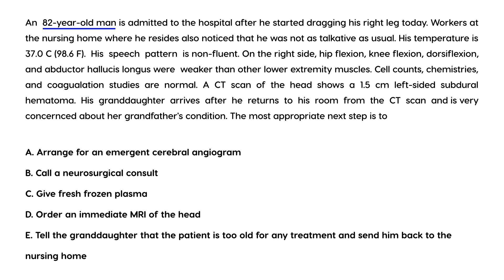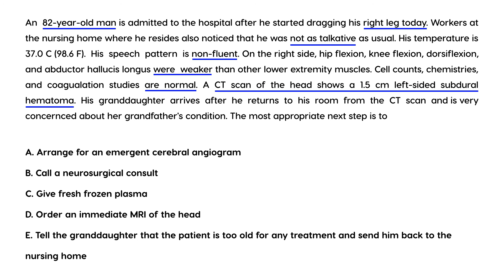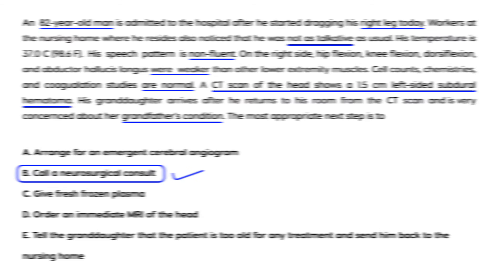Third vignette: an 82-year-old man is admitted after he started dragging his right leg. Nursing home workers noticed he was less talkative. His speech is non-fluent, and right-side hip flexion, knee flexion, dorsiflexion, and abductor hallucis longus are weaker. Cell counts, chemistries, and coagulations are normal. CT scan shows a 1.5-centimeter left-sided subdural hematoma. The most appropriate next step is a neurosurgical emergency: immediate craniotomy with evacuation of the blood, performed by a neurosurgeon.